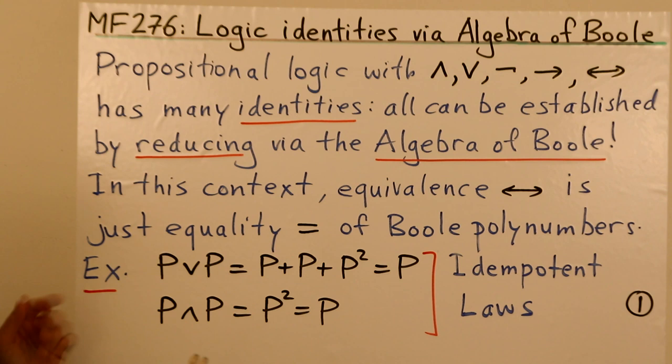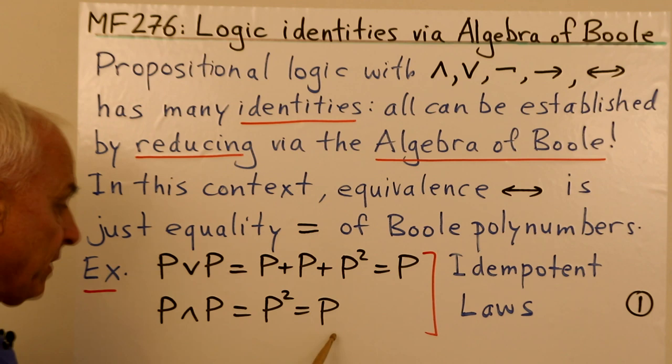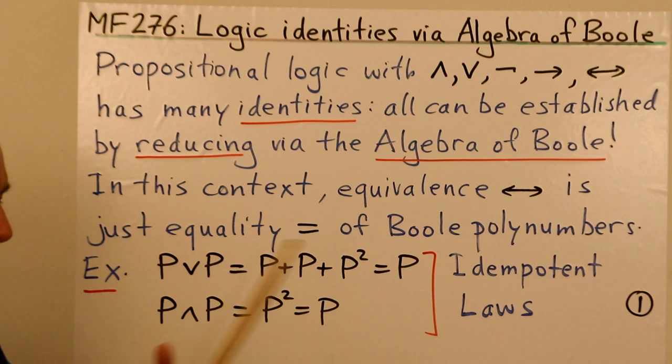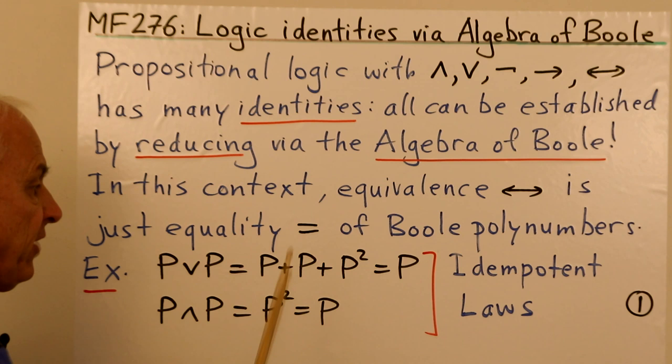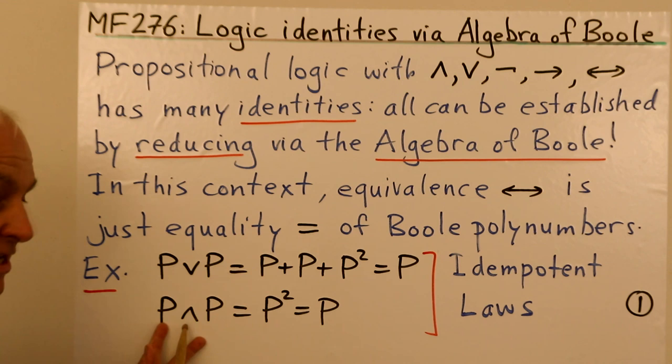Let's go through some examples. The idempotent laws: one says that p∨p equals p, and the other is p∧p equals p. For p∨p, we convert to the algebra of Bool: p plus p plus the product p squared, which reduces to just p. For p∧p, that's p squared, and p squared equals p in the algebra of Bool. So these are almost immediate.